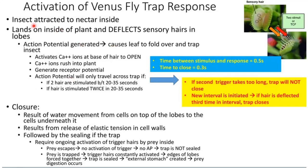To summarize: once a hair gets deflected, and if it gets deflected twice or two hairs get deflected within 20 to 35 seconds, an action potential is generated. This activates the calcium ion channels at the base, calcium rushes in causing depolarization and generating a receptor potential. The action potential will only travel to the next cell if these two-stimulation conditions are fulfilled.